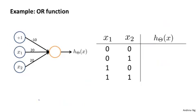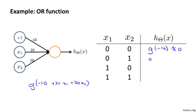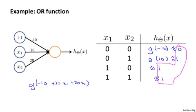This network shown here computes the OR function. Just to show you how I work that out, if you write out the hypothesis, you find that this is g of minus 10 plus 20x1 plus 20x2. And so if you fill in these values, you find that that's g of minus 10, which is approximately 0, g of 10, which is approximately 1, and so on. And these are approximately 1 and approximately 1. And these numbers is essentially the logical OR function.